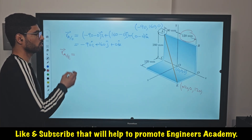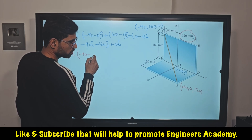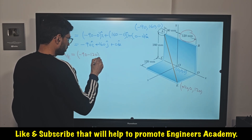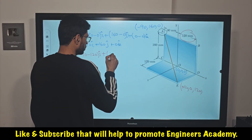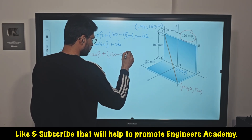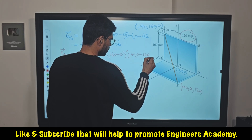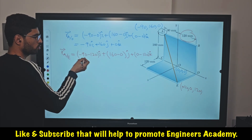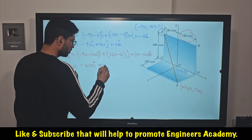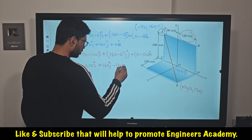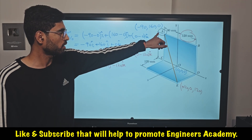So those are the coordinates of point E, and these are the coordinates of point A. We want to find the position vector of A relative to E, so we subtract the coordinates of point E from those of point A. We write: (−90 − 120)i + (160 − 0)j + (0 − 120)k. This gives us −210 i + 160 j − 120 k. Using this coordinate subtraction method, we have determined the position vector of A relative to E.